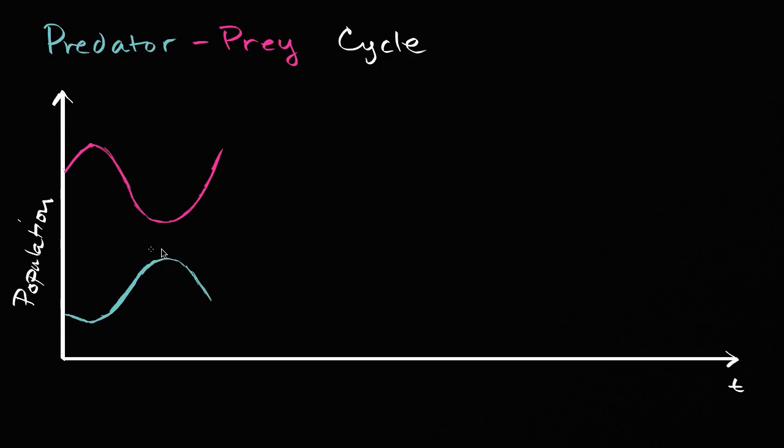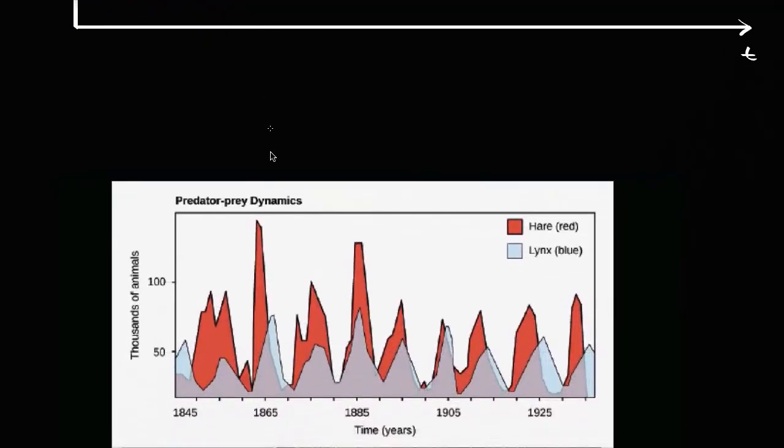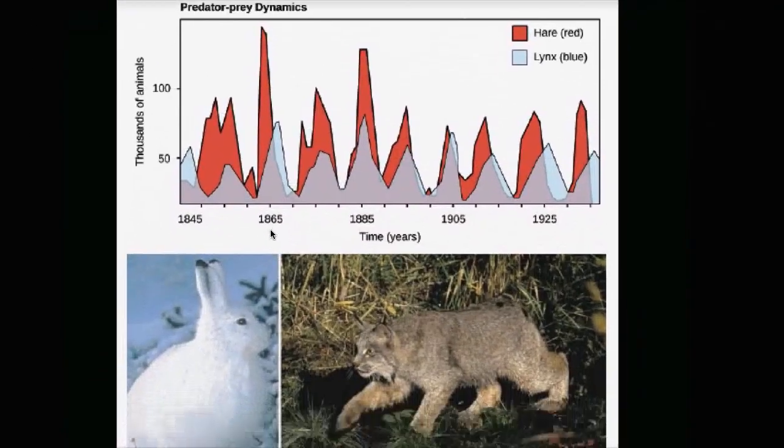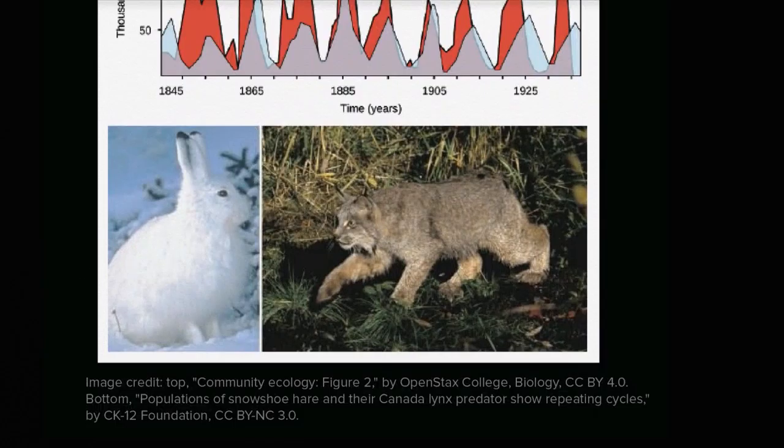And I just reasoned through that you could imagine a world where you could have the cycle between predator and prey populations. But you can also run computer simulations that will show this, and even observational data out in the field also shows this. One of the often cited examples is interactions between the snowshoe hare, which would be the prey in this situation,